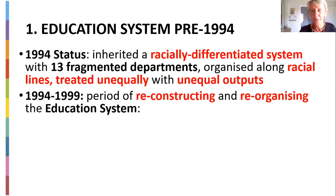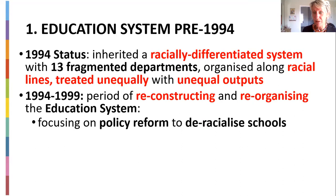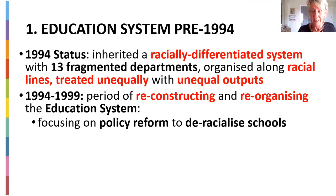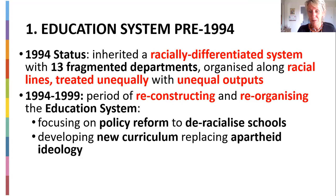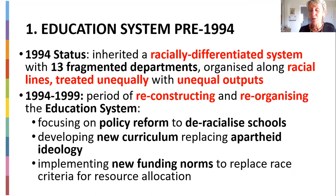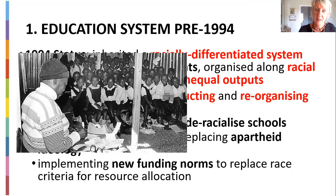From 1994, post-democratic election to 1999, it was a period of restructuring and reorganizing the education system in South Africa. The whole idea was to reform policy and de-racialize the schools. No whites could go to a black school, no blacks could come to a white school — we had all the segregation with apartheid. And also to develop a new curriculum to replace the whole ideology from apartheid, so you could actually have one core curriculum, and have new funding norms for equal distribution of resources across different schools.